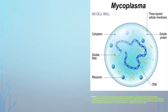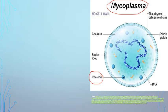Our first topic is mycoplasma. This is the simplest and smallest living organism. This is the cell structure of mycoplasma — it consists of a simple structure containing only ribosomes as cell organelles. It comes under kingdom Monera according to Whittaker's five-kingdom system of classification. This is a prokaryote; it consists of a three-layered cell membrane similar to gram-negative bacteria, and it contains cytoplasm.